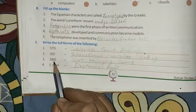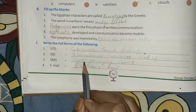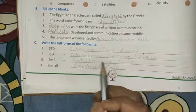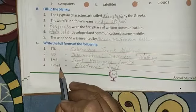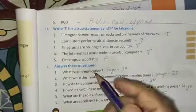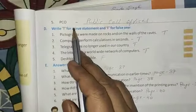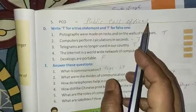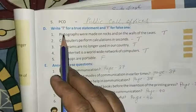Now number 3, SMS, that is Short Messaging Service. Number 4, email, that is Electronic Mail. Now next is PCO, that is Public Call Offices.